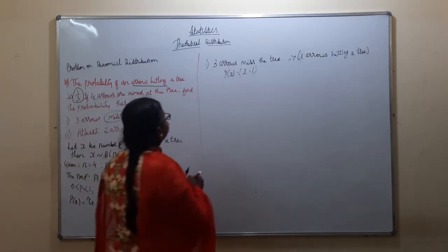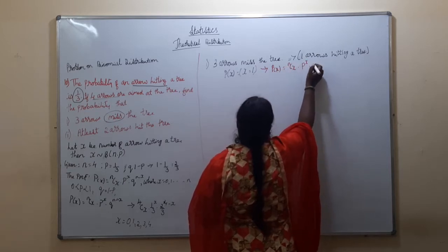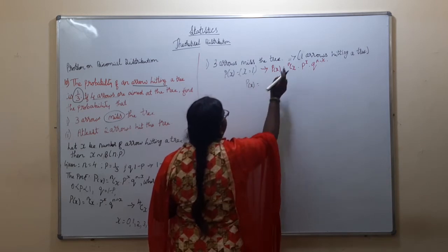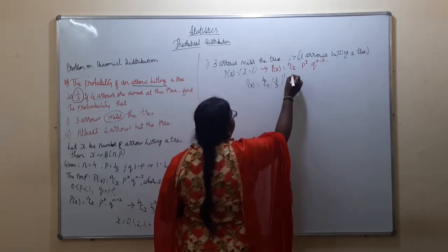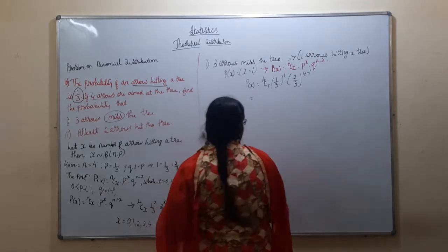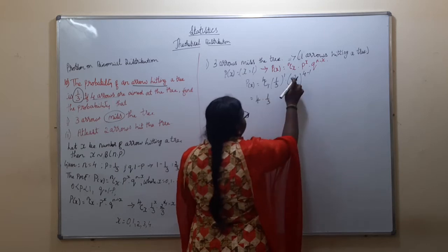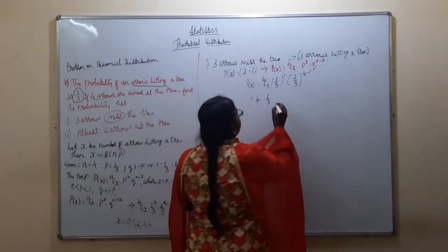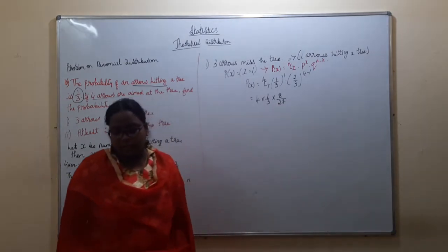Using the formula P(x) = nCx into p^x into q^(n−x), with x = 1: P(x=1) = 4C1 into (1/3)^1 into (2/3)^(4−1). 4C1 = 4, and (2/3)^3: 2^3 = 8, 3^3 = 27. So we get 4 into (1/3) into (8/27).